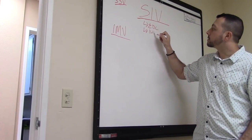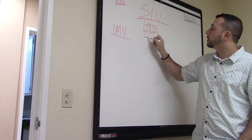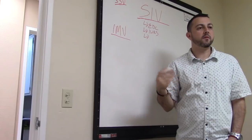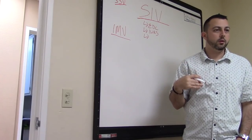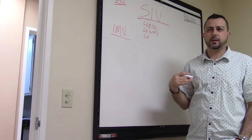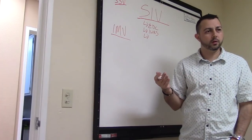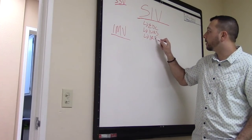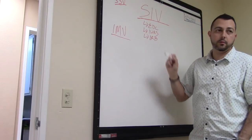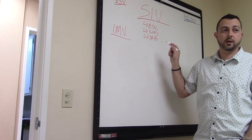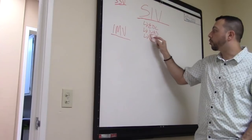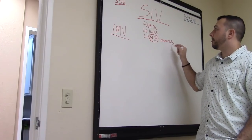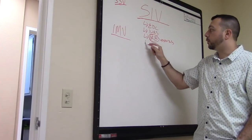Key vendor access to verify at an SIV includes EDC, IWRS, and any assessment vendors like ECG — for example, CardioCore is an ECG vendor. You also need to confirm IRB approval and access to their portal, since IRBs now have their own online portals.